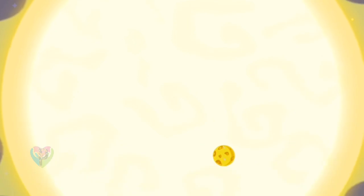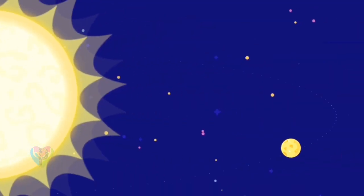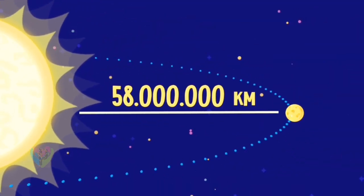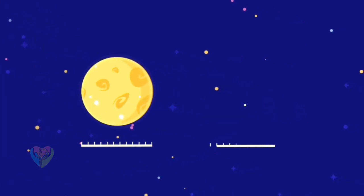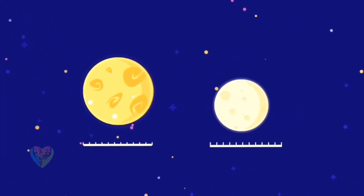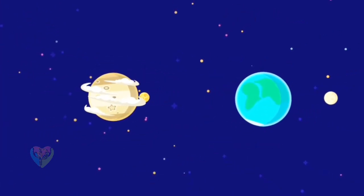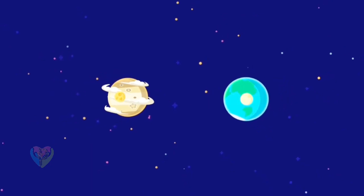This is Mercury, the smallest planet in the solar system and one that is closest to the Sun. In size and appearance, it is similar to the Moon. Perhaps a long time ago it used to be a satellite of Venus.